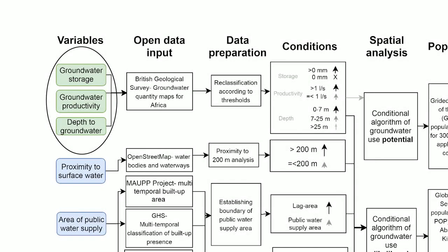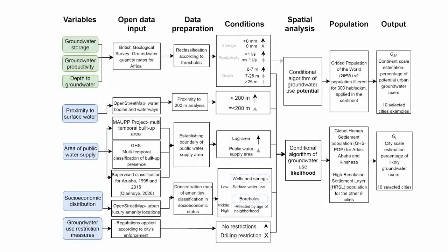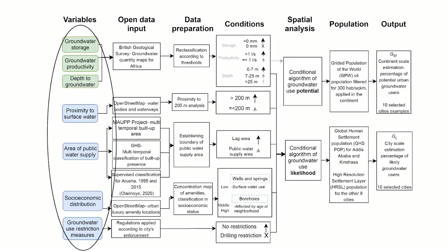The likely urban population was estimated by also considering proximity to surface water, groundwater use restrictions, proxies for socioeconomic status and the spatial extent of the public water supply.